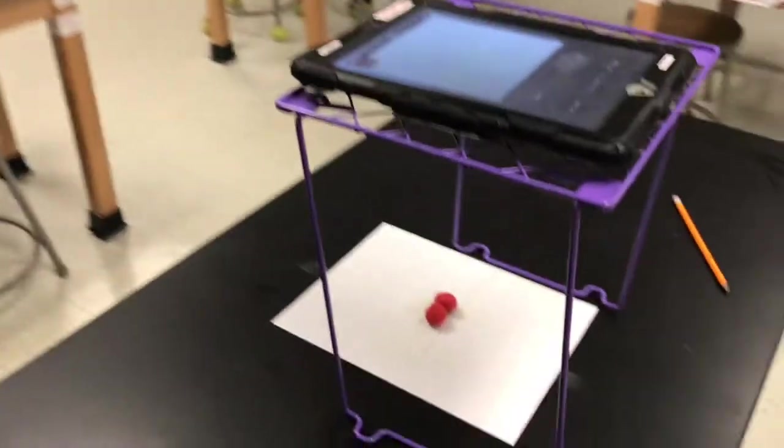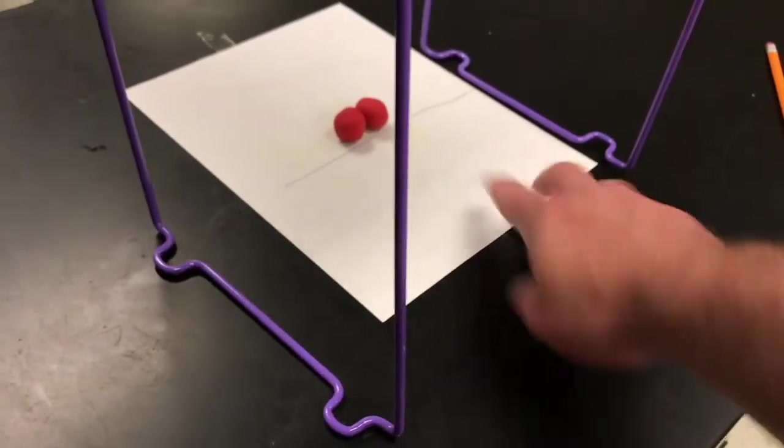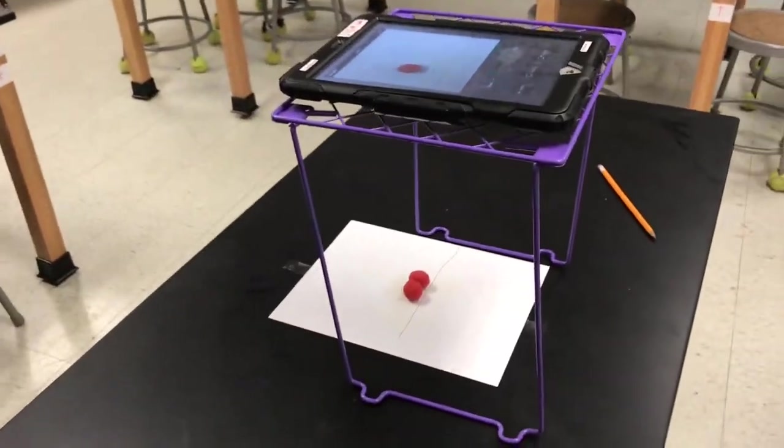The way it works is you're going to get a piece of paper and tape it to your table. You'll want a new one because the last class probably got clay on it. Then with your stand set up,